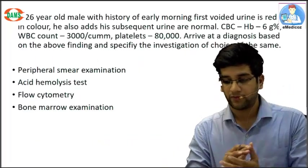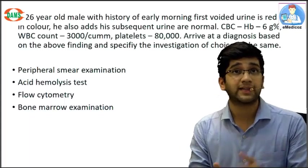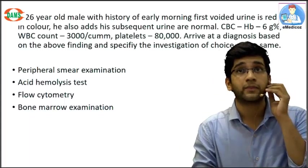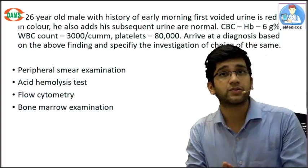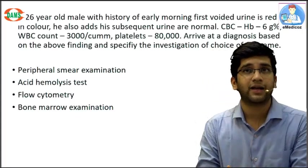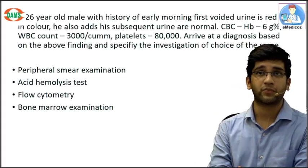26-year-old male with a history of early morning first voided urine that is red in color. His subsequent urine is normal. CBC shows hemoglobin is 6, WBC count is 3000, platelets are 80,000. Arrive at a diagnosis based on the above clinical findings and specify the investigation of choice for the same.